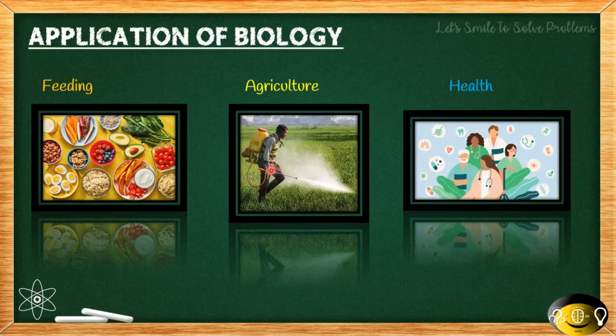For feeding and health, we have probiotics — very tiny living organisms like bacteria. They help us improve our digestion and keep our gut healthy. By eating probiotic-rich foods we can support our overall digestive health. Probiotic foods are basically found in yogurt, yeast-related foods, or fermented foods.